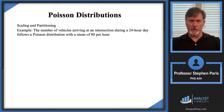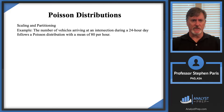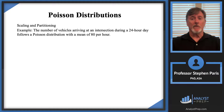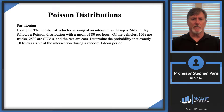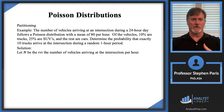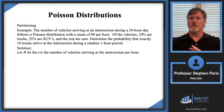That was an example of scaling the exposure unit. Now let's look at an example of partitioning. We start with the same setup: 80 vehicles arriving per hour. Now let's partition the vehicles into types: 10% are trucks, 25% are SUVs, and the rest are cars. I've partitioned the objects we're counting. The question is: what's the probability that exactly 10 trucks arrive at the intersection during a random one-hour period?